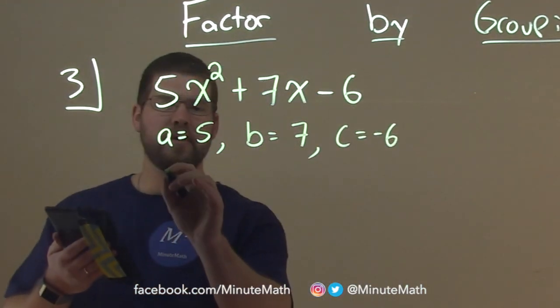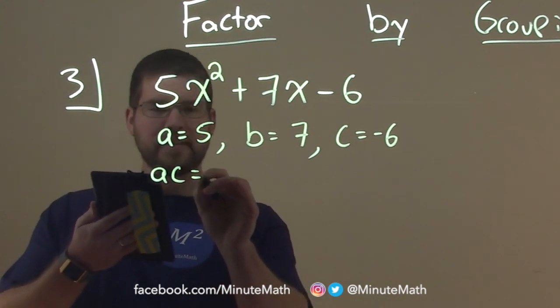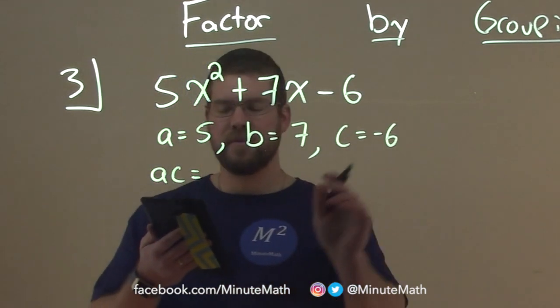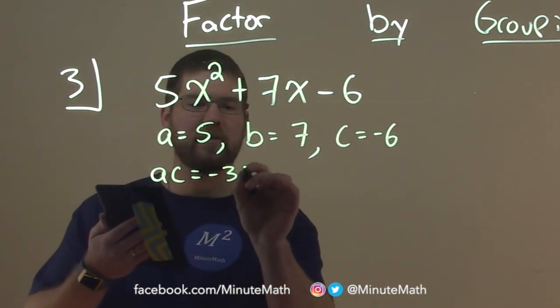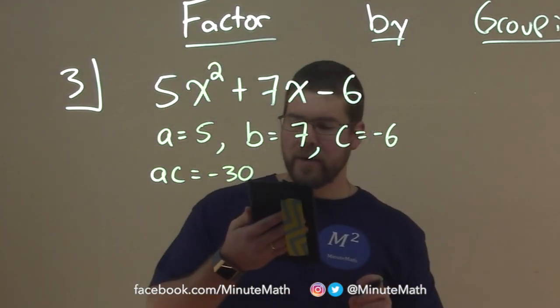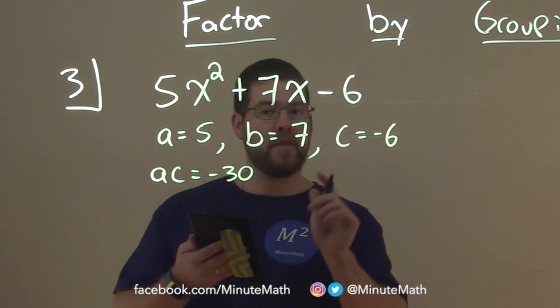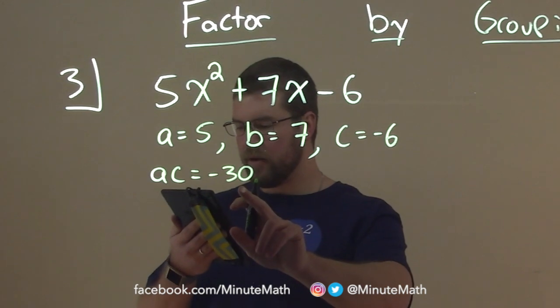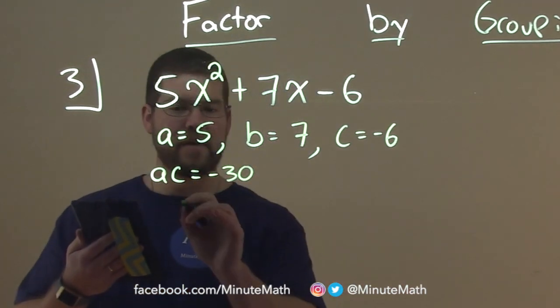We first want to determine what AC is. A times C, so 5 times negative 6 is negative 30. Then, we need to find two numbers with the product of negative 30 and the sum of B, which is 7.